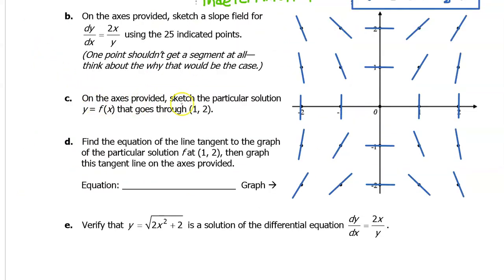For part C, sketch the particular solution y equals f of x that goes through 1 comma 2. The point 1 comma 2 is on the slope field. Following the slope heading down, and looking ahead, by the time I reach the x-axis I need a horizontal slope. So I'm bending the curve as I come in, and looking ahead, the slope bends back up. The result is sort of a parabola-type shape.